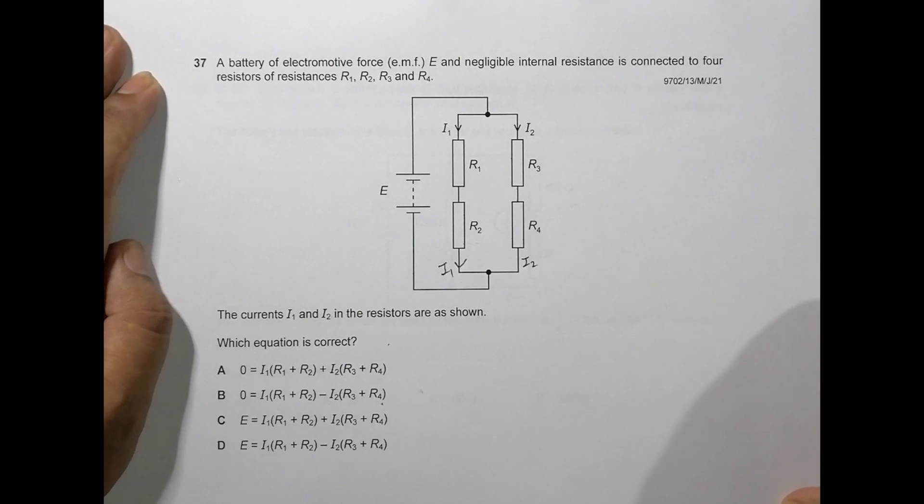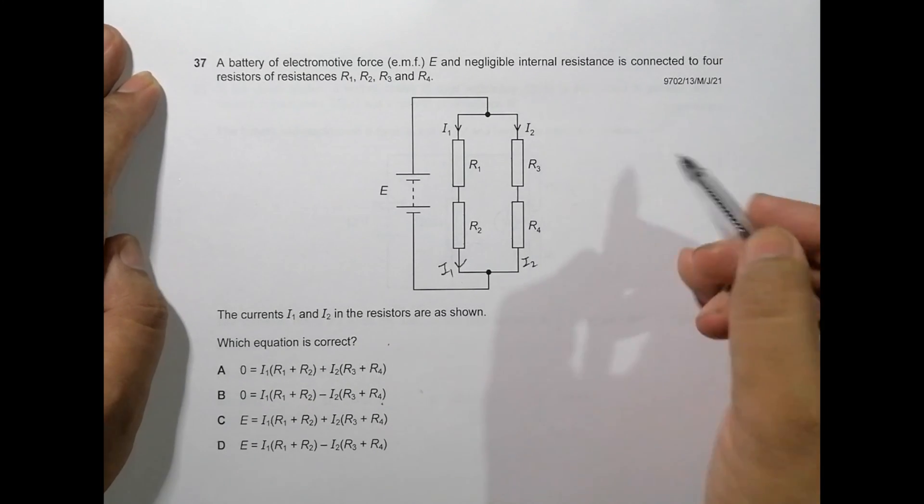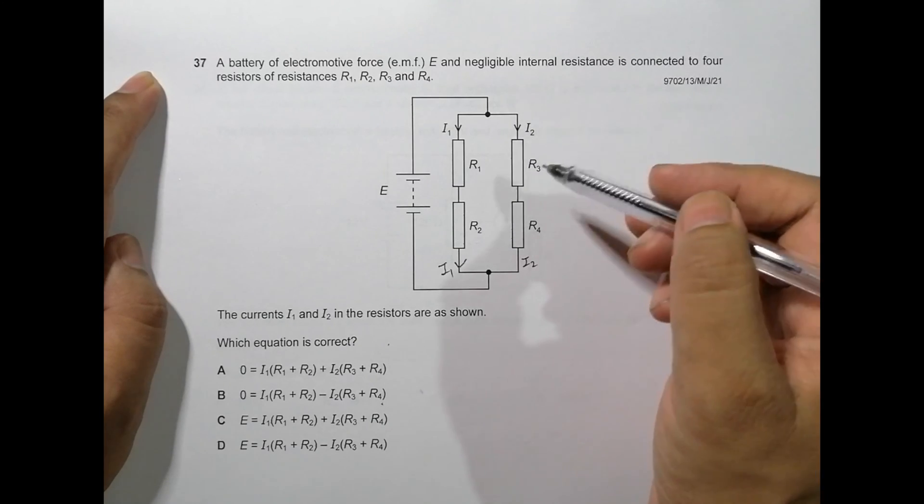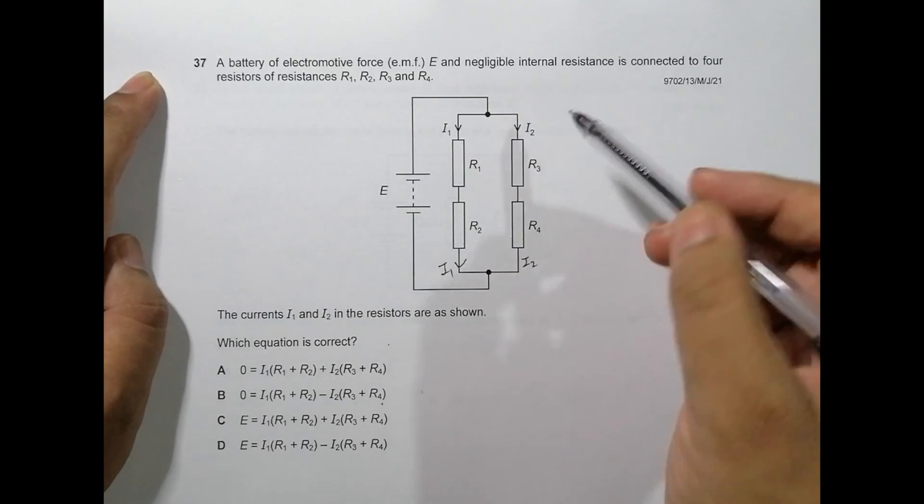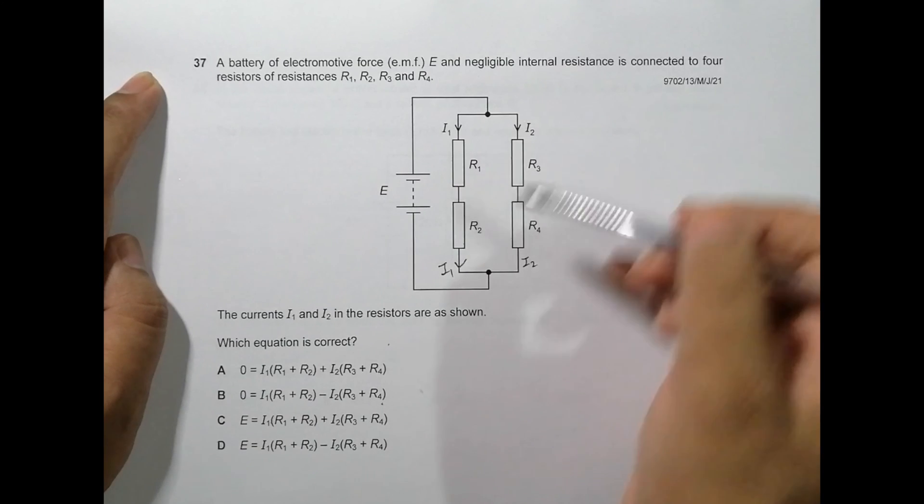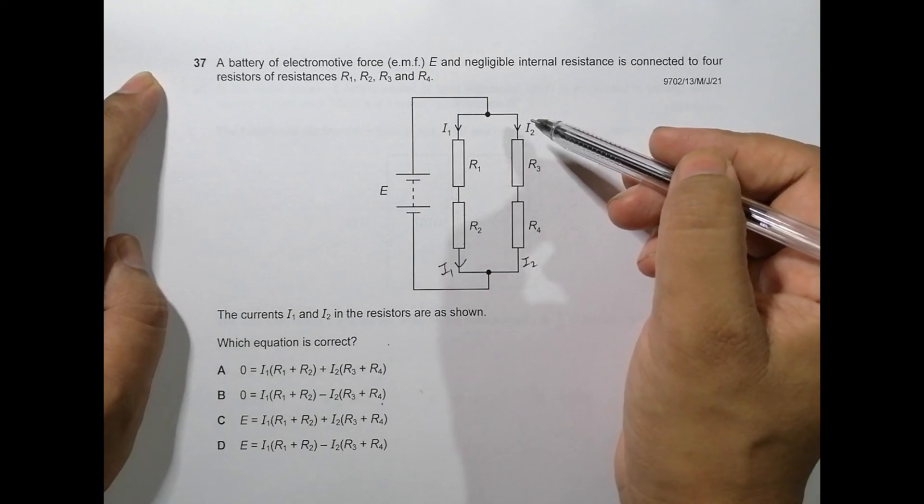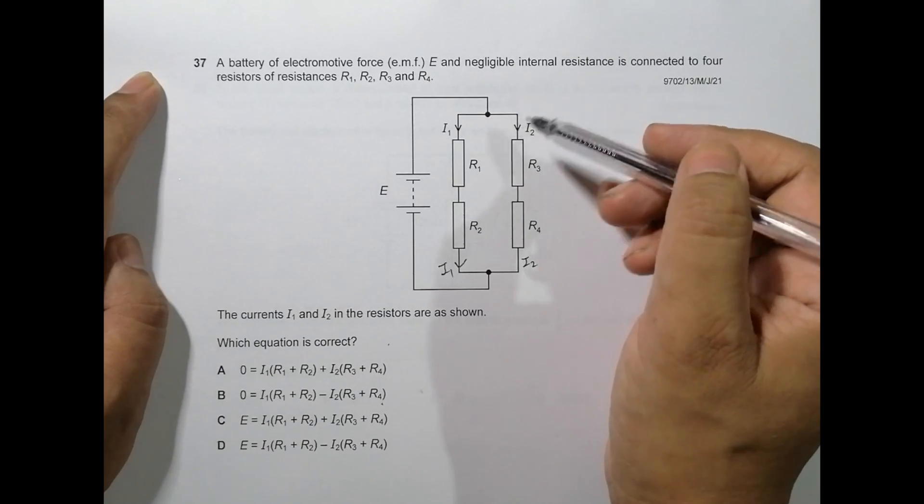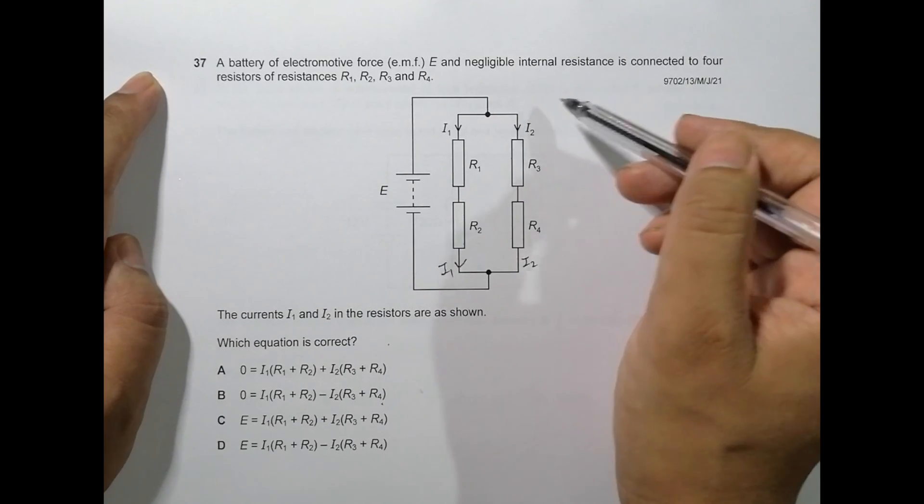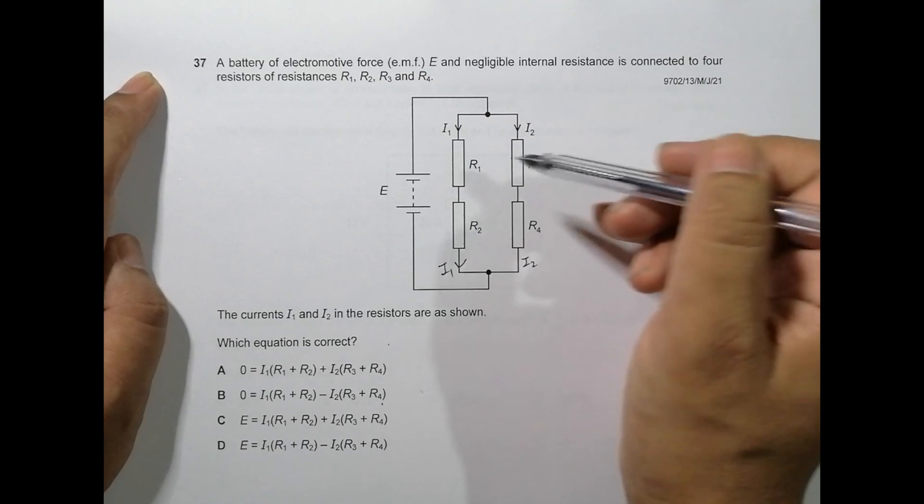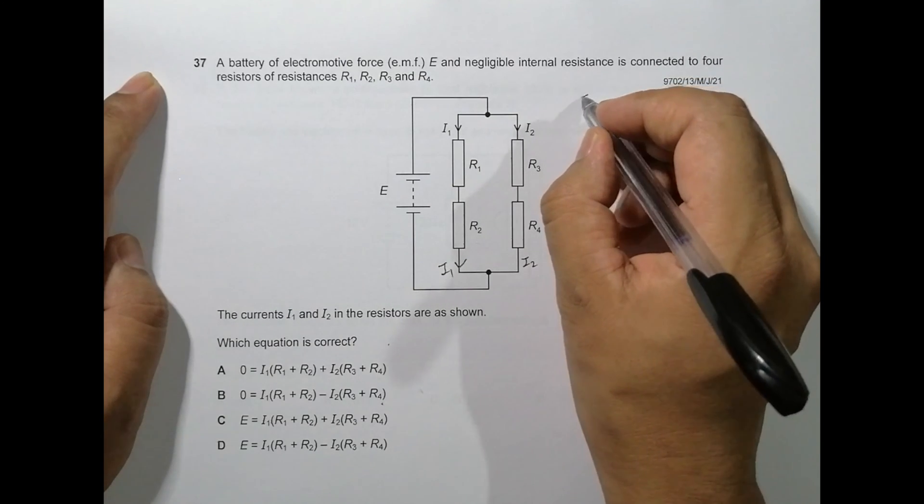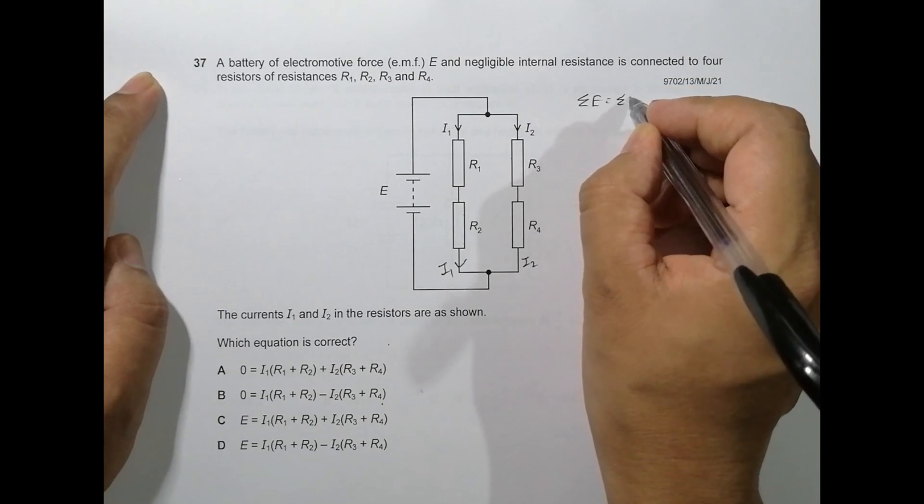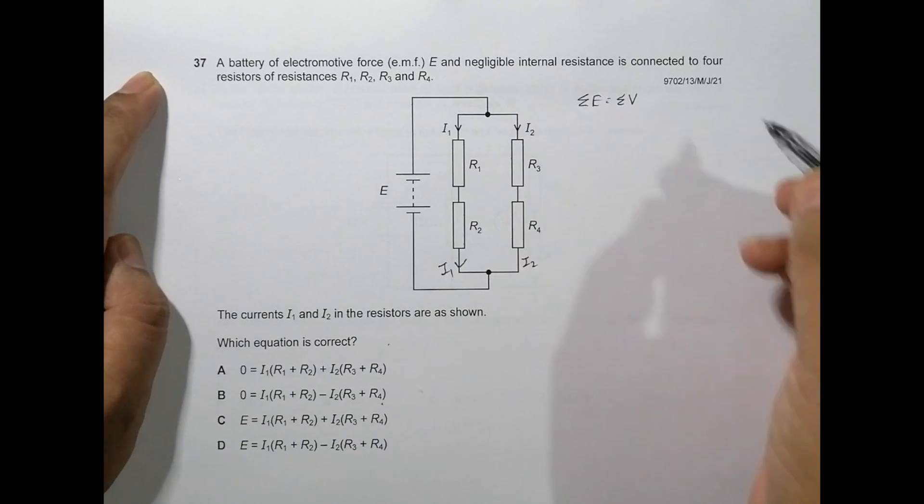Which equation is correct? We have to find from among the given equations which one is correct. If I go through the circuit, we have Kirchhoff's second law. It's about emf, so we have to apply the equation according to Kirchhoff's second law. In the second law, what it says is in any closed loop, the sum of emf is equal to the sum of potential differences. So let us go for the loops here.